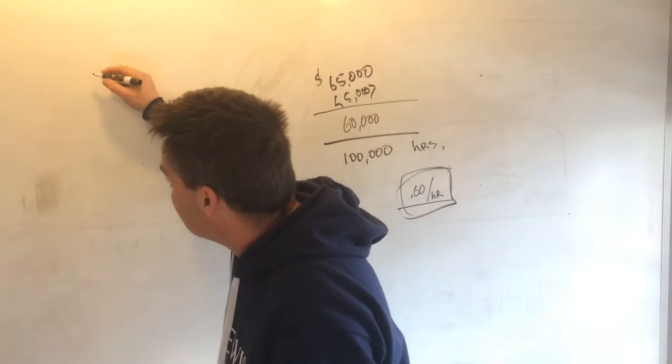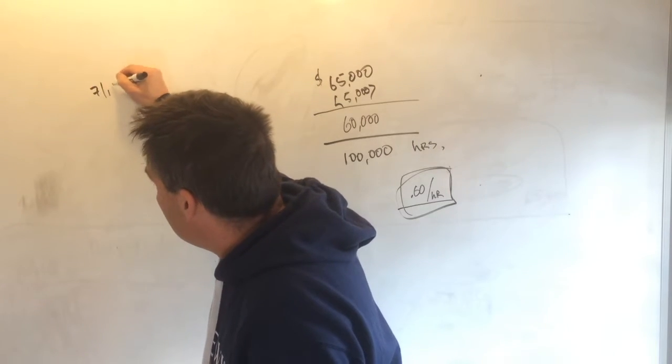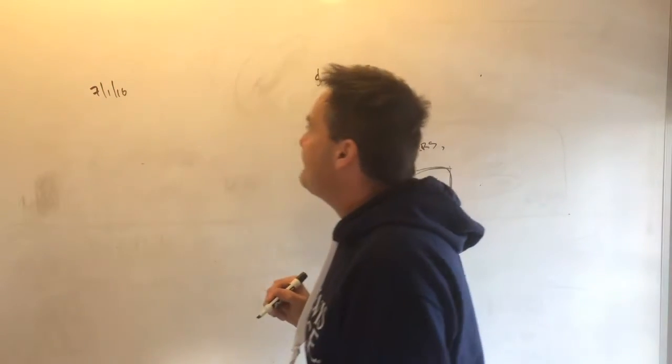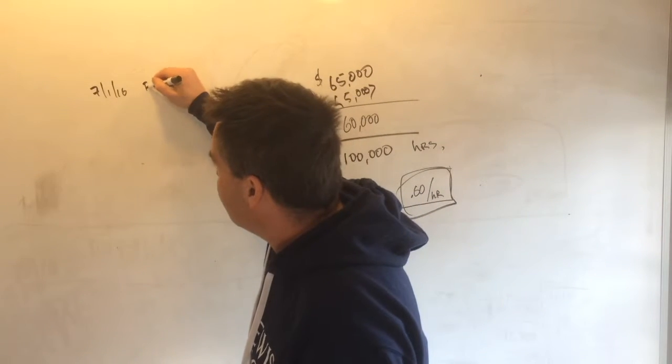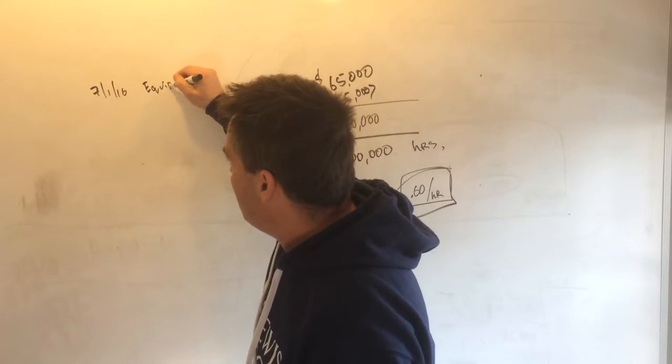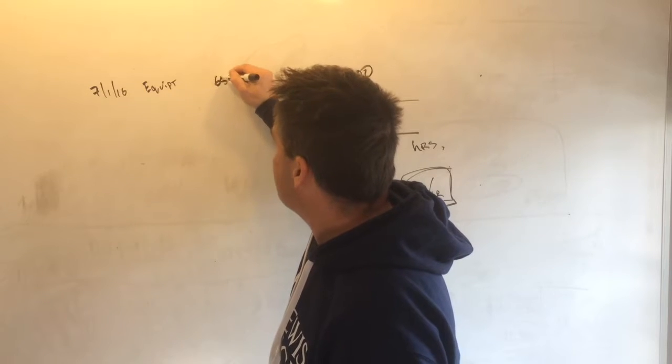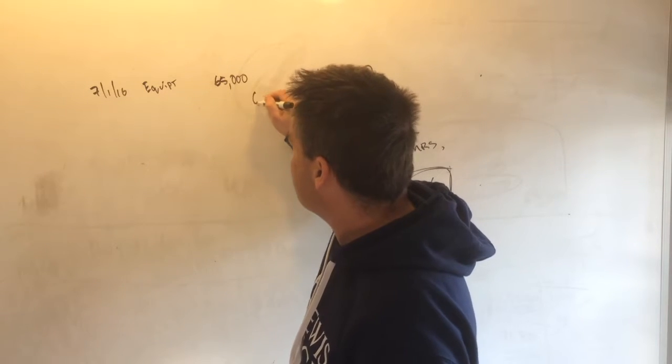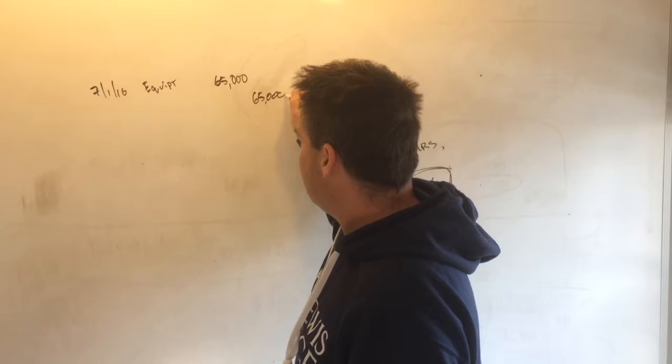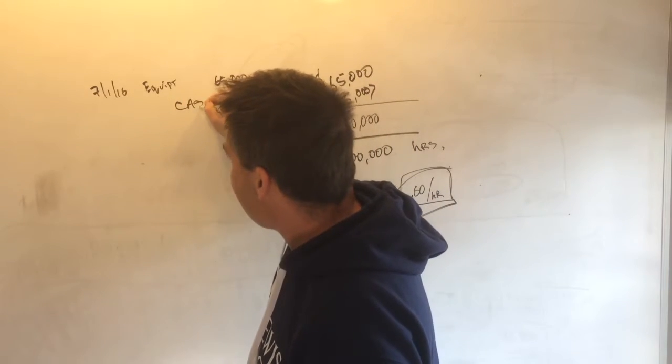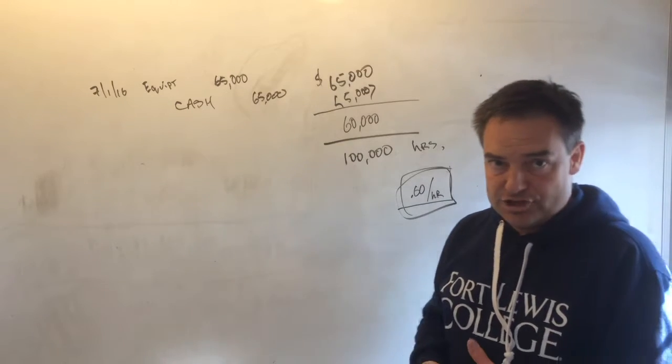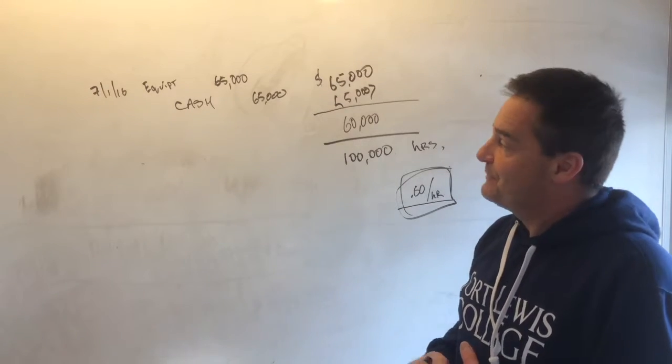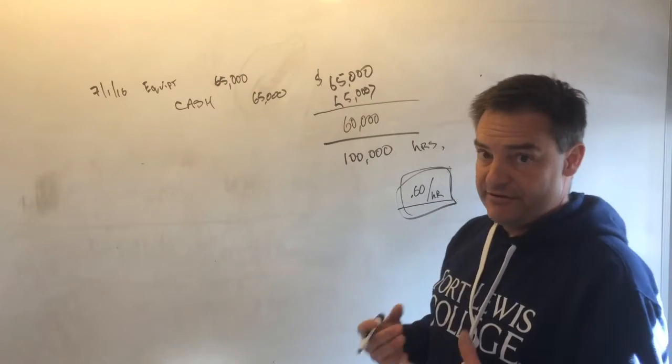So if you bought this piece of equipment on 7-1-2016, the journal entry for buying the forklift would be a debit to equipment or forklift for $65,000, a credit to however you paid for it, we'll just say cash for $65,000. That would be your journal entry when you purchased it.